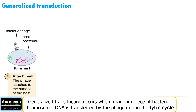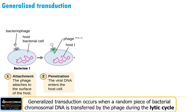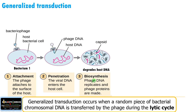During bacteriophage infection, step one is attachment of the bacteriophage to the surface of the host. This is followed by injection of genetic material — this is the host DNA and this is the phage genome. Third step, biosynthesis: replication of the phage genome and synthesis of protein coat or capsid, along with degradation of host DNA. The host or bacterial DNA is cut into fragments.